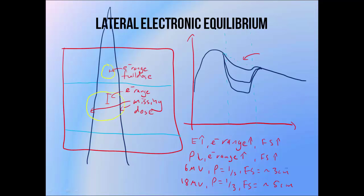Older generation dose calculation algorithms like pencil beam convolution weren't able to predict the effects of the loss of equilibrium on dose, so they'd show a PDD curve closer to what we'd see with a dotted line. In reality what happens is that the drop in dose begins just before the proximal tissue boundary, as points begin to lose dose due to loss of lateral electronic equilibrium, and there's a rebuild up effect across the distal boundary as lateral electronic equilibrium is re-established. If you're treating a tumour inside lung, these build down and rebuild up effects could have quite a significant clinical impact, since they can result in underdosing of the tumour border.